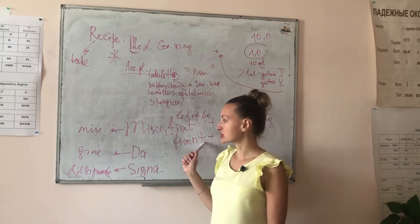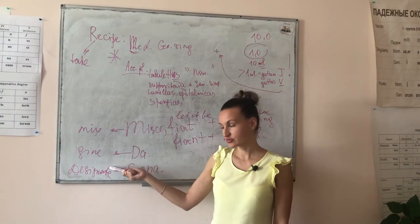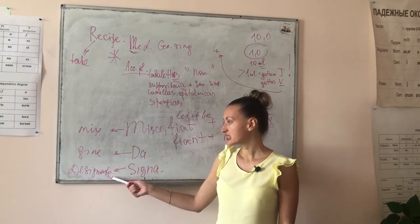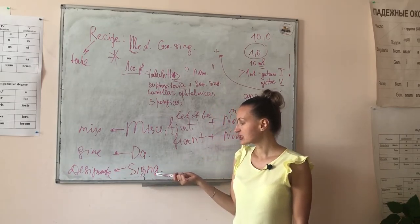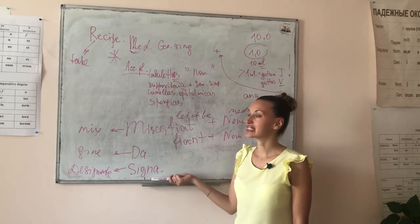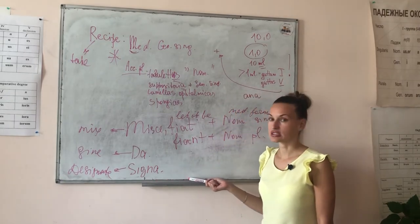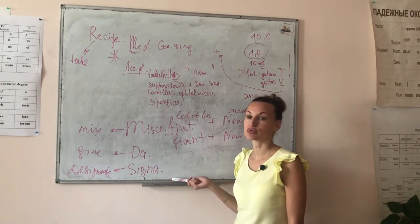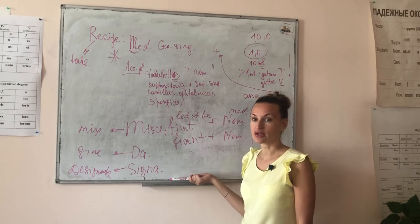Then we finish with 'da,' meaning 'give' in English. The last command is 'signa,' which means 'designate.' This is the last portion of the Latin prescription written in Latin. After 'signa,' we may write in the native language — whether Russian if writing a prescription in Russia, or any other native language such as Indian.